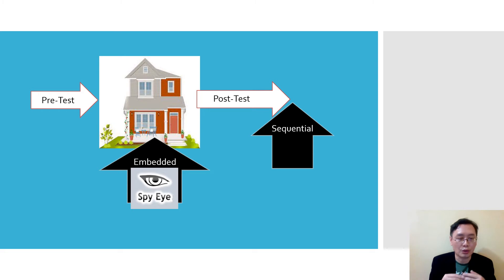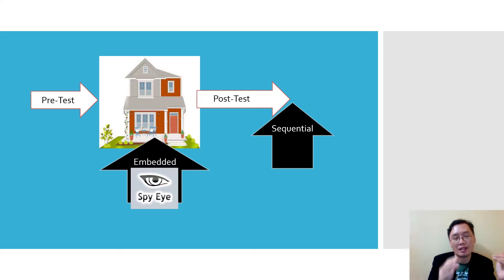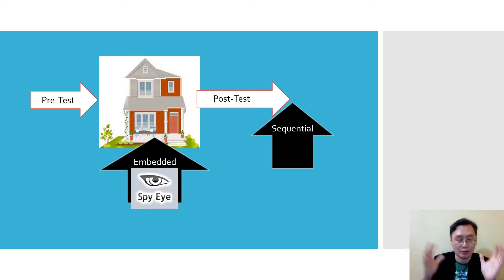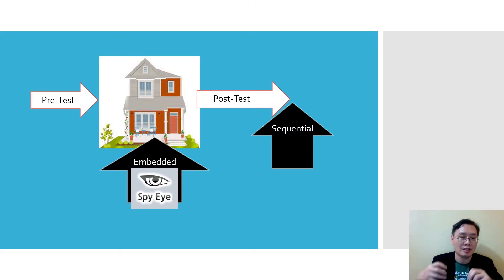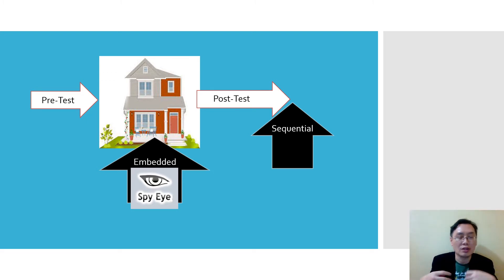Here is a pictorial demonstration of the mixed method research design for explanation purposes. Let's say a house is an intervention. You pre-test a person on certain variables before they go into the house, then after they go through the house — the intervention — there is a post-test where you measure the variables as well. There are two approaches to provide explanation. The first is what we call embedded mixed method design — you put in hidden cameras, like a spy eye, to monitor movement and capture episodes of change during the intervention.